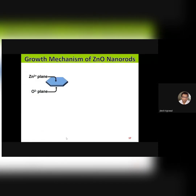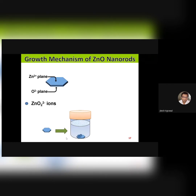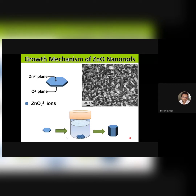Zinc oxide is a polar semiconductor — its top surface is rich in zinc ions which are positively charged, and its bottom surface is rich in oxygen ions which are negatively charged. When you place the seed-layer coated sample in the precursor solution, the ZnO₂⁻ ions forming during the chemical reaction get deposited over the top surface of the seed layer, because they are negatively charged and are coulombically attracted towards the positively charged surface. That leads to the formation of ZnO nanorods, as we have obtained over the glass substrate.